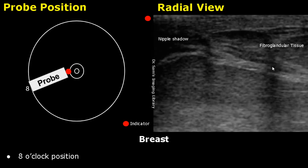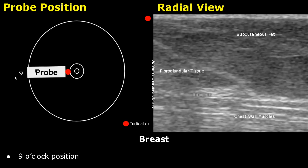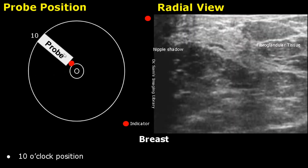This transducer placement is for an 8 o'clock position; in this image we can see a prominent nipple shadow. This transducer placement is for a 9 o'clock position, where we see a thicker layer of subcutaneous fat and the fibroglandular tissues, with the chest wall muscles below. Here is a 10 o'clock position — the fibroglandular tissues in this image are very dense with a lot of hyperechoic areas. A nipple shadow is not always seen but is present in some cases.